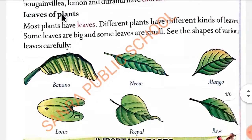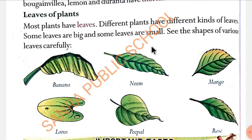Leaves of plants — podho ki pattiyan. Most plants have leaves, adhik tarah plants mein leaves hoti hai. Different plants have different kinds of leaves, alag-alag plants mein alag-alag tarah ki pattiyan hoti hai. Some leaves are big, some leaves are small. See the shape of the various leaves carefully. Banana — banana mujhe bhoot pasand hai. Banana tree ka jo leaf hota hai woh bhoot badi hoti hai. Aur banana ka tree aisa tree hota hai jiske andar lakdi nahi hoti. Neem, mango, lotus are also examples of different leaves.